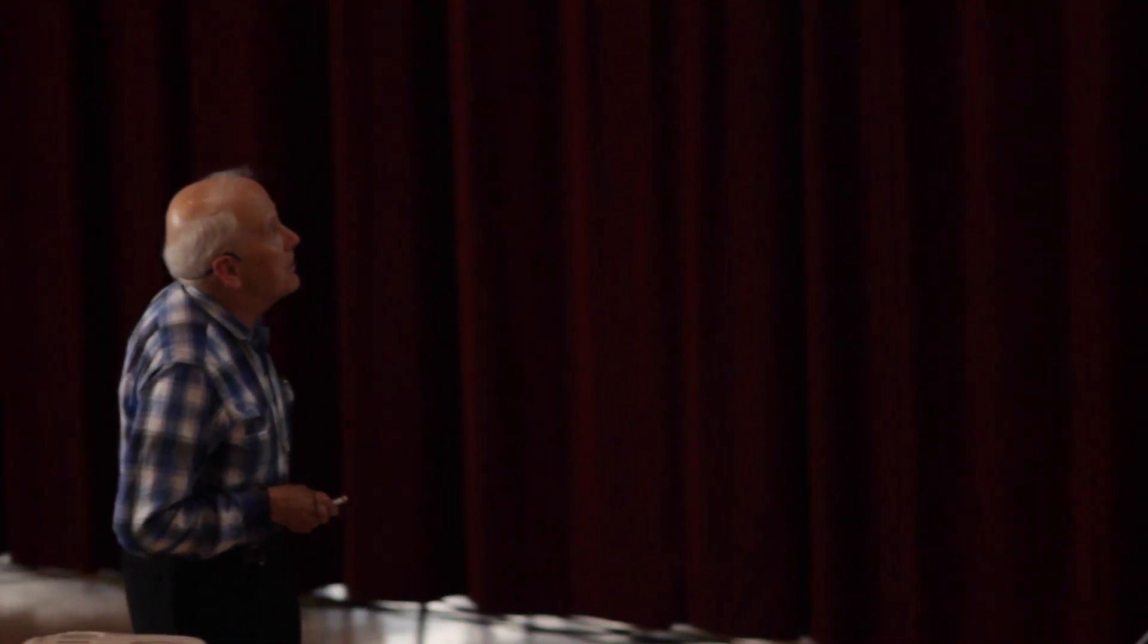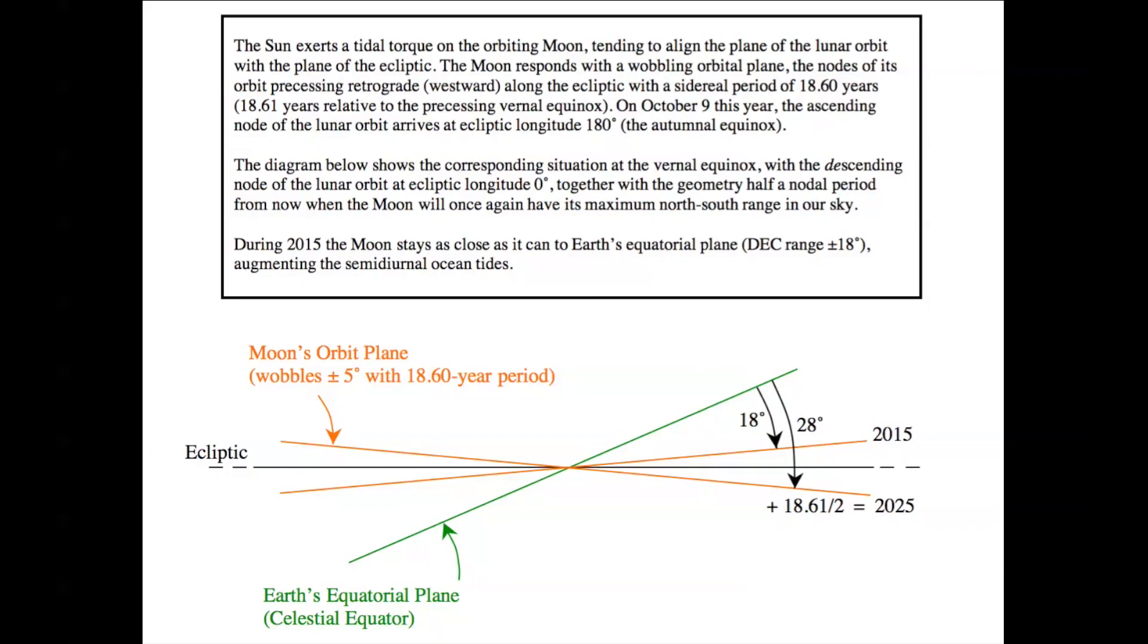There's another variable besides the elliptical nature of the lunar orbit. The orbit is tilted. The sun exerts a tidal torque on the orbiting moon, tending to align the plane of the lunar orbit with the plane of the ecliptic. Here in this diagram, the black line is the ecliptic, or Earth's orbital plane, and here the green line is Earth's equatorial plane, or what we call the celestial equator. Of course, one is tilted about 23 degrees to the other. The lunar orbit is tilted to the ecliptic. It can be as much as five degrees either way relative to the ecliptic.